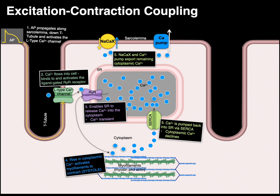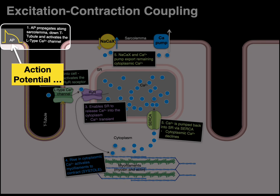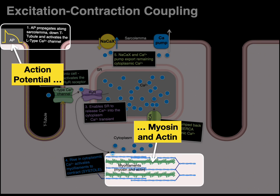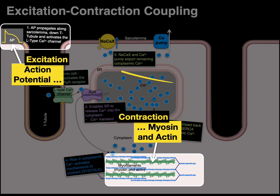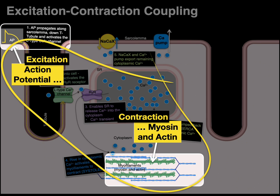In this diagram that shows five steps from beginning to end, we begin with an action potential and end with myosin and actin contracting — excitation, contraction, coupling, and everything in between.